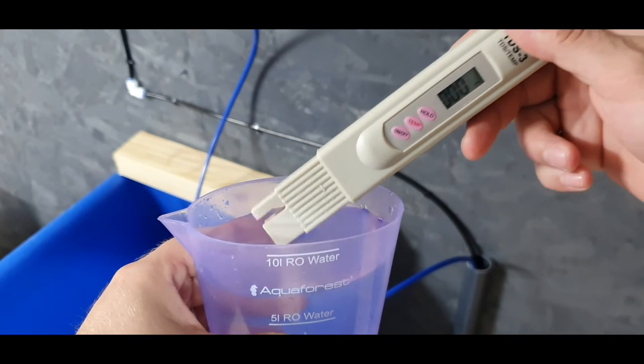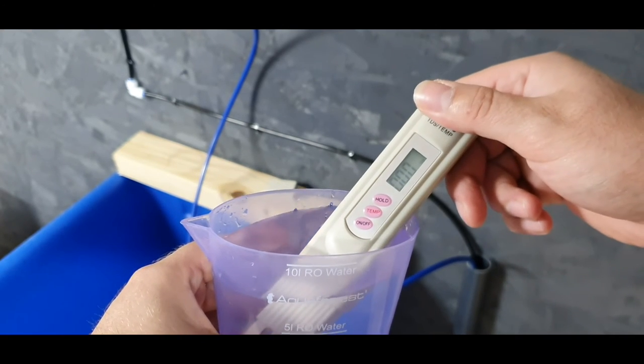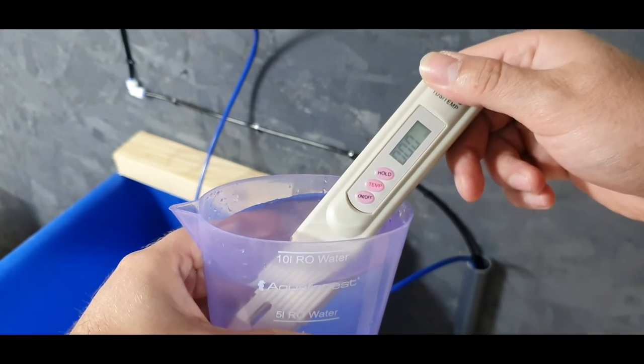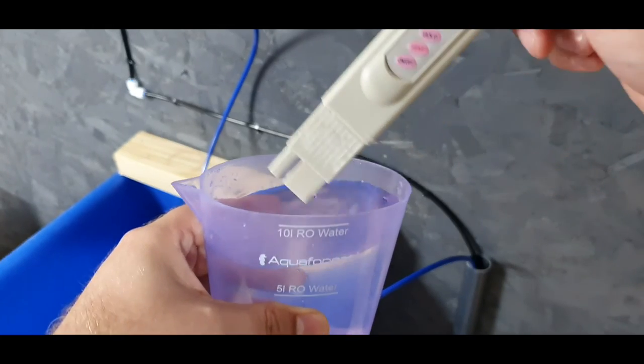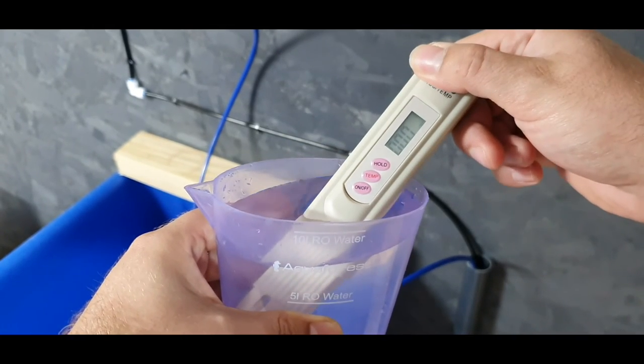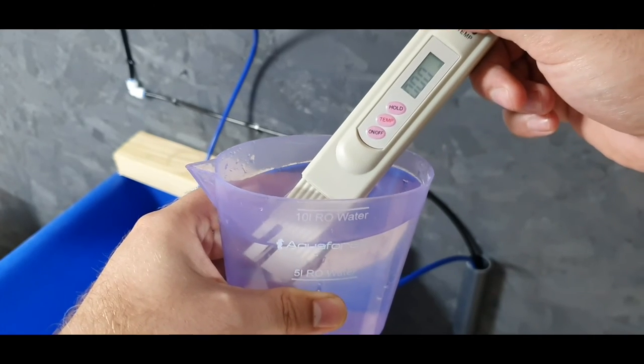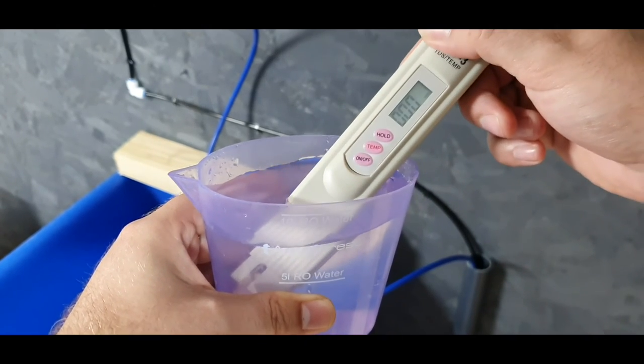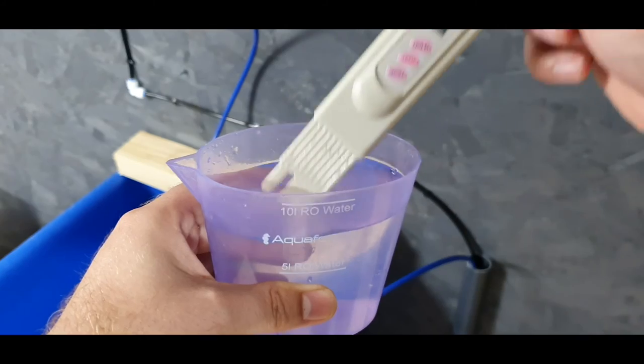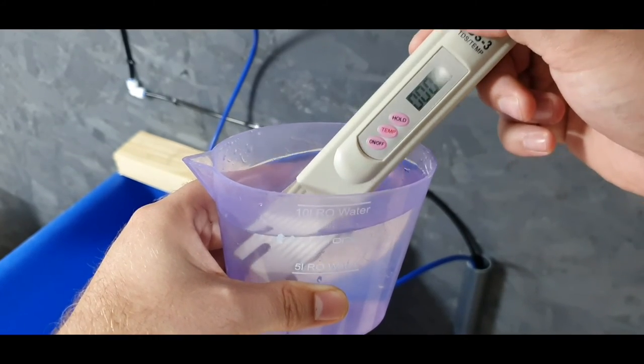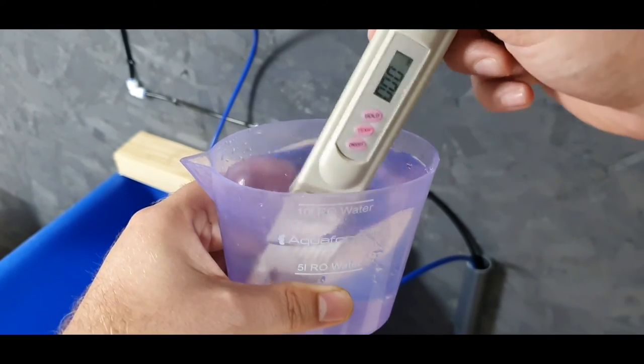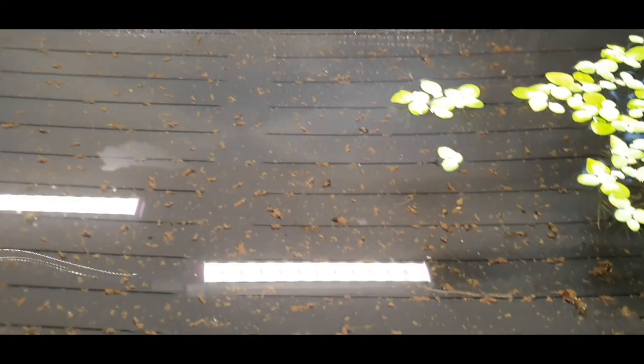We'll just have a look and see what it is. So we've got a reading of zero, which means that the RO unit's removed practically everything from the water, which is an impeccable result. In fact, I was expecting it to be at least one or two, but we can see it's at zero.